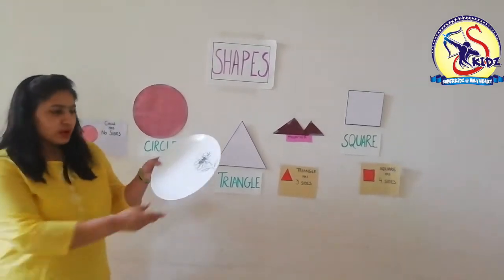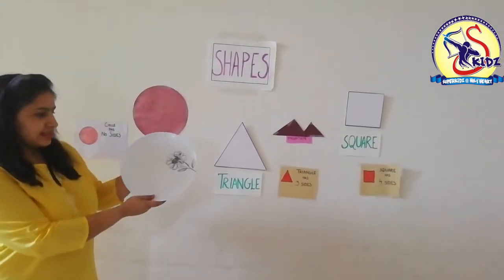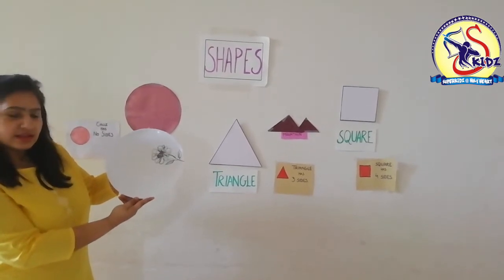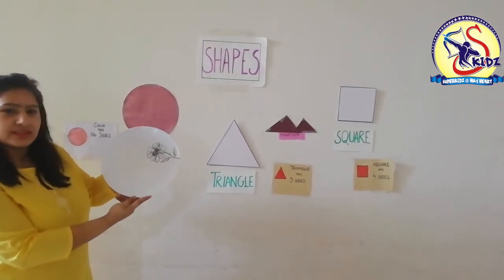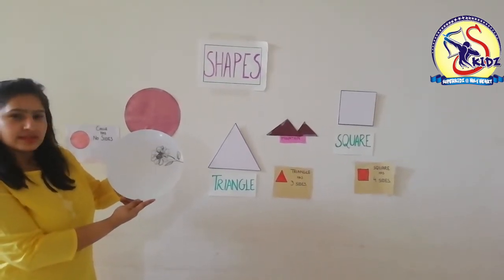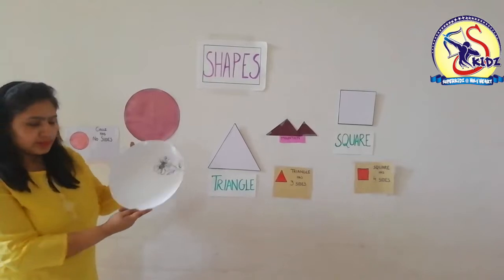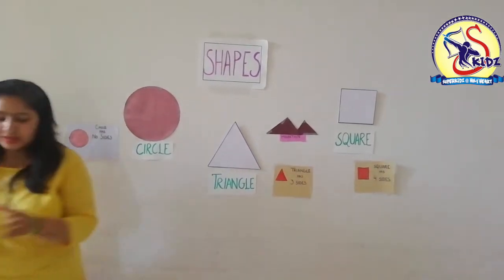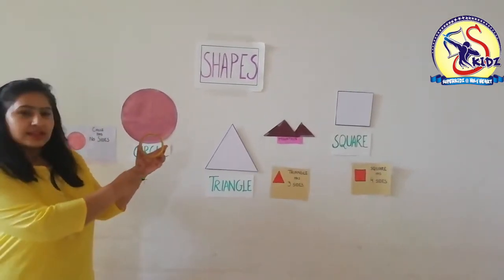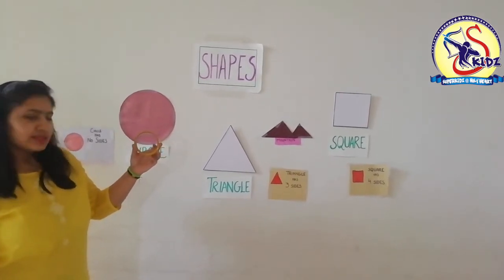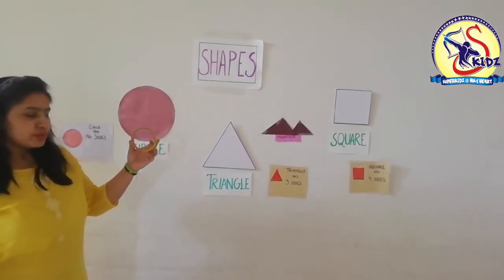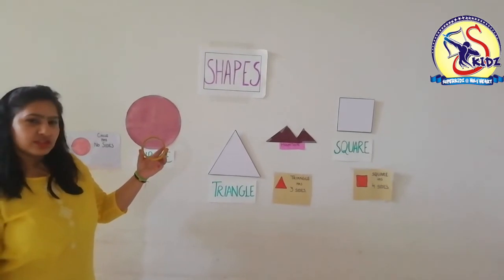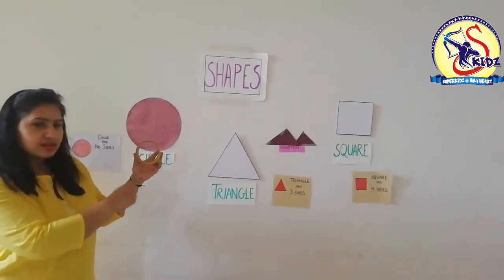What is this? This is a plate. The shape of a plate is circle. What is the shape of the tape roll? It is circle in shape. The shape of tape roll is circle.